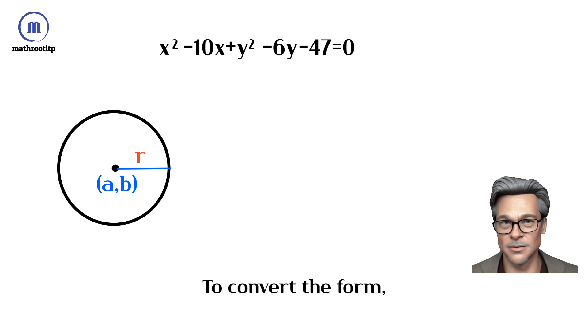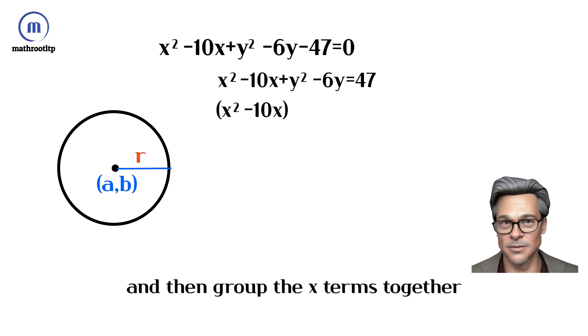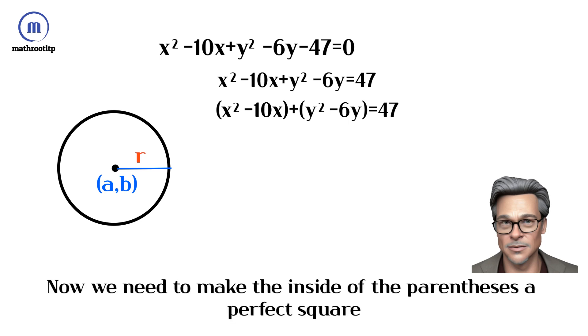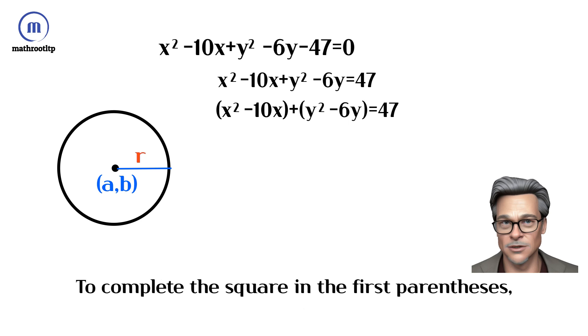To convert the form, I'll move the constant term to the right-hand side and then group the x terms together and y terms together. Now we need to make the inside of the parentheses a perfect square. To complete the square in the first parentheses, divide the coefficient of the x term by 2.